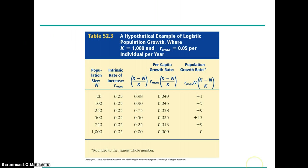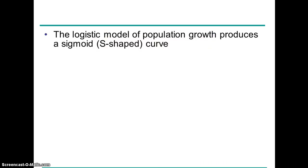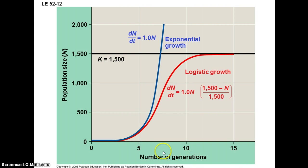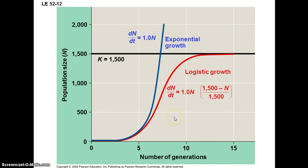Here again is our logistic growth equation, which factors in the carrying capacity. This model leads to an S-shaped curve. The blue line represents our exponential growth model, which just has the growth rate and number of individuals. The logistic model has the carrying capacity factored in such that early on you'll have a period of exponential growth, but then as you approach the carrying capacity, the growth rate begins to slow because N is getting closer to K and this side of the equation is getting closer and closer to zero until you finally reach the carrying capacity, at which point there is no growth.